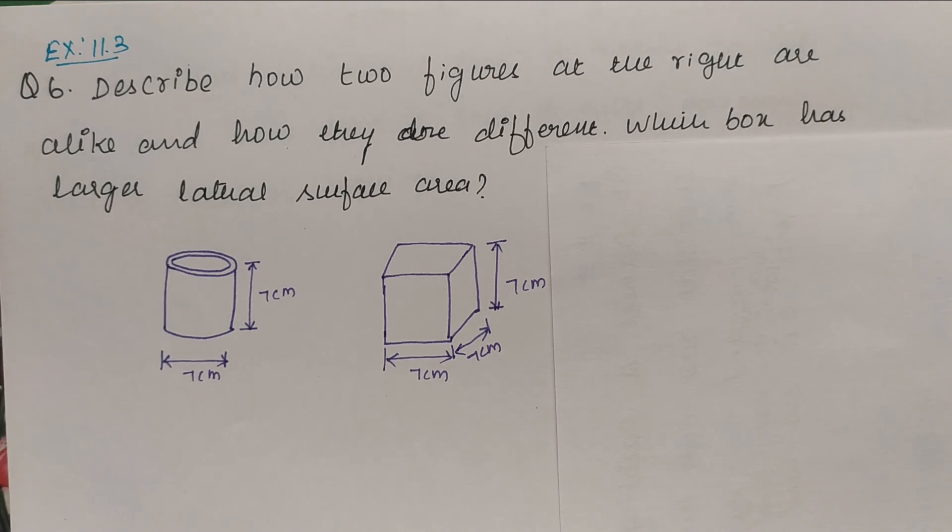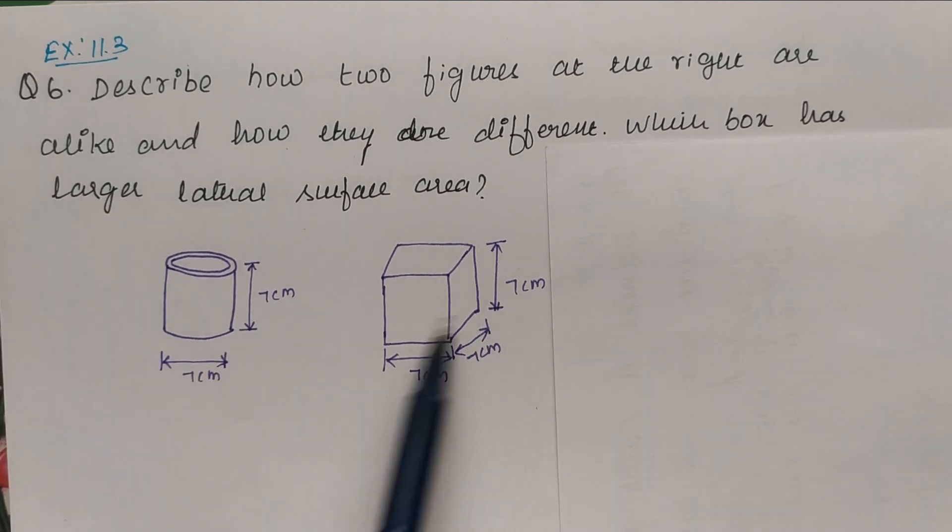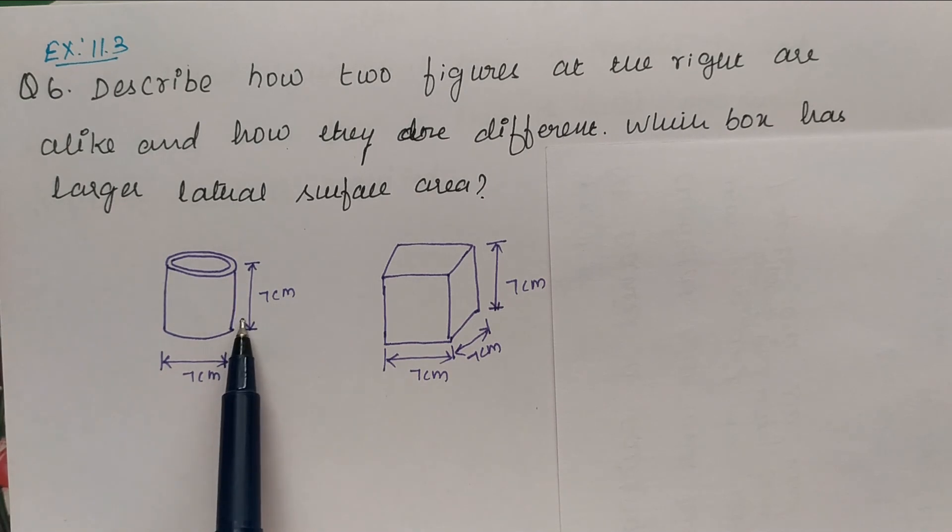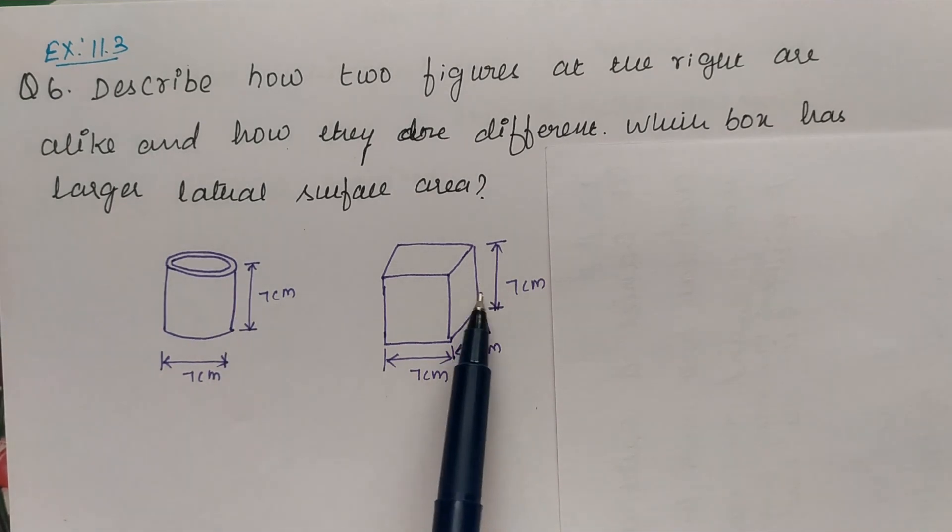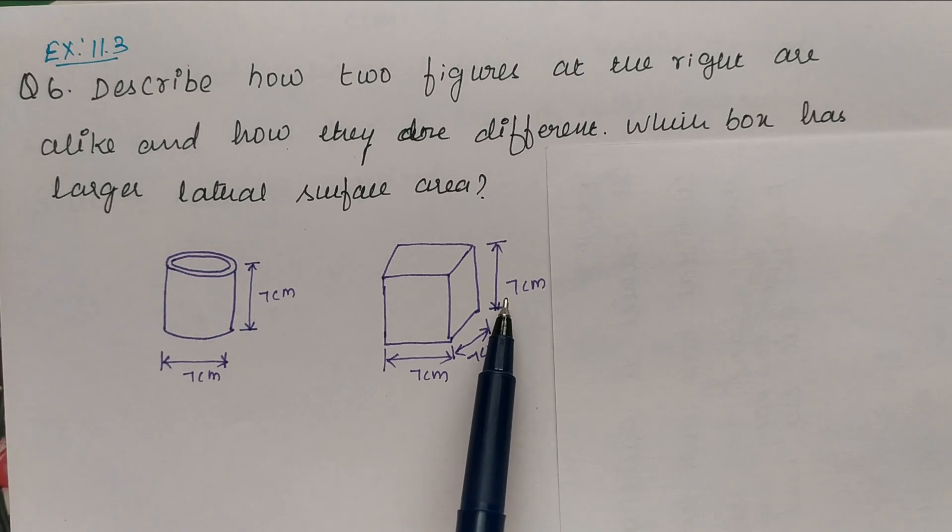So we have to tell which one is having larger lateral surface area and we have to find the similarities and differences between these two figures. The similarities are both are having the same height. Height of the cylinder is 7 cm and height of the cube is also 7 cm.